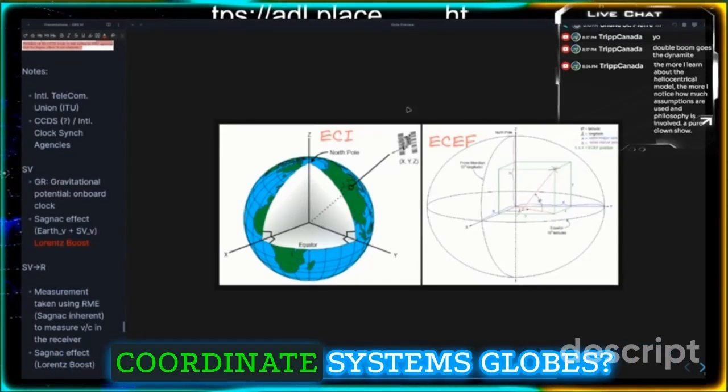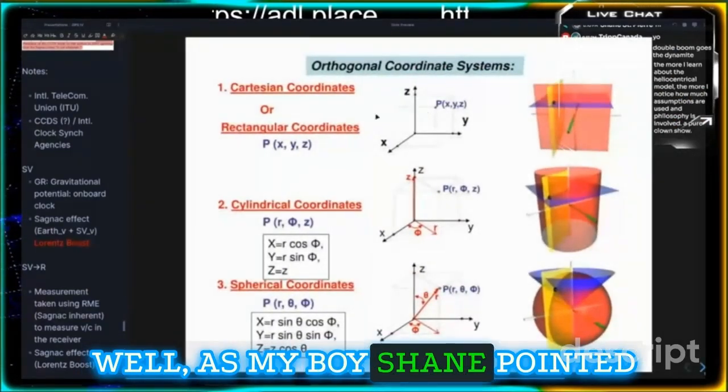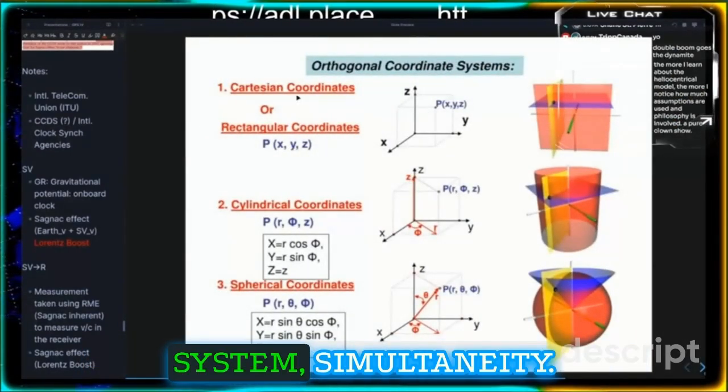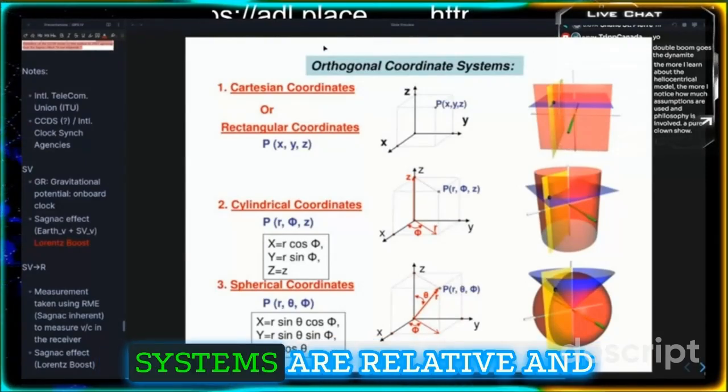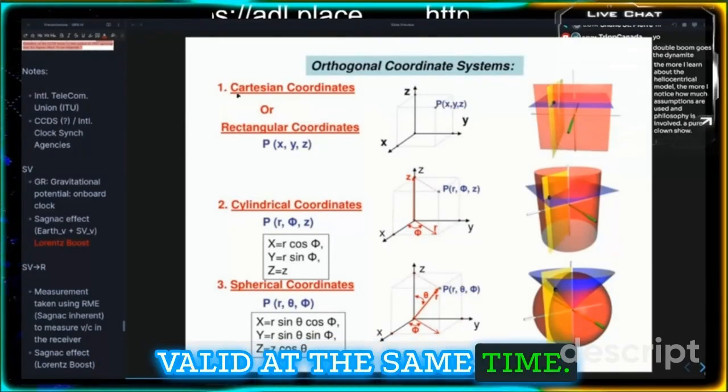Aren't these coordinate systems globes? Well, as my boy Shane pointed out, we live in coordinate system simultaneity, where all these coordinate systems are relative and valid at the same time.